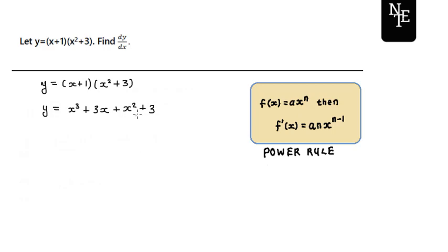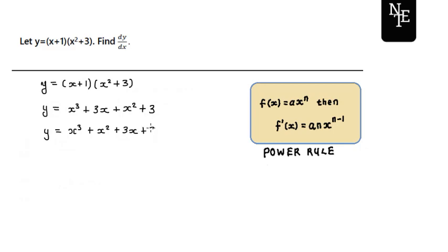You can rearrange this and write it in the standard form of your polynomial — in other words, with decreasing exponents — so you can rewrite it as y equals x cubed plus x squared plus 3x plus 3. But this step is really not necessary if you are just looking at finding the derivative.